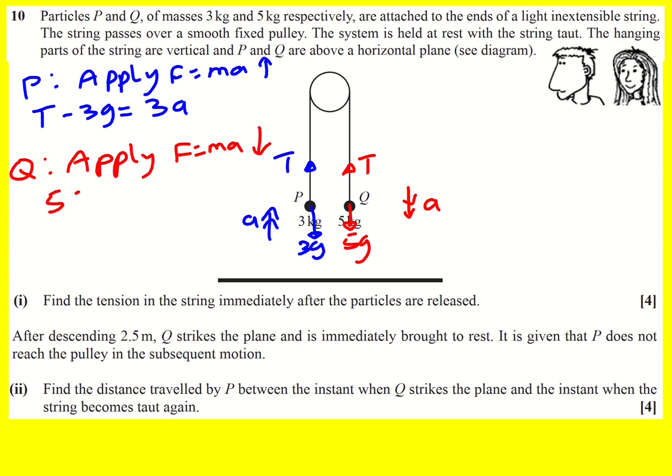So in this case 5G minus T is going to equal 5A. And I've constructed two equations with two unknowns. These are simultaneous equations. Now I'm being asked for the tension but I tend to find with these sorts of questions, because you've got a T and a minus T it just makes sense to eliminate T and work out A first. And we can do that by adding them together. So adding them is going to give 2G because minus 3G plus 5G is 2G equals 8A.